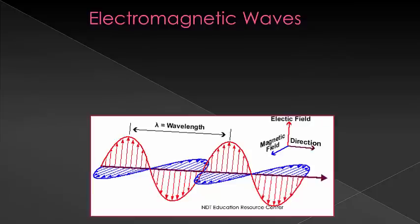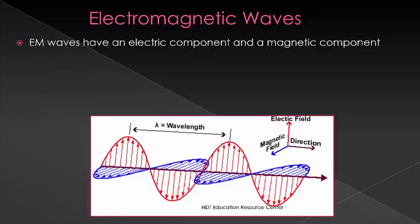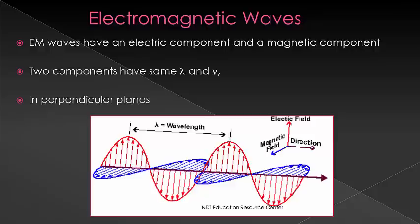Electromagnetic waves are actually made of two components, an electrical and a magnetic component, that have the same properties such as wavelength and frequency but are perpendicular to each other. As with all EM radiation, both travel at the speed of light.